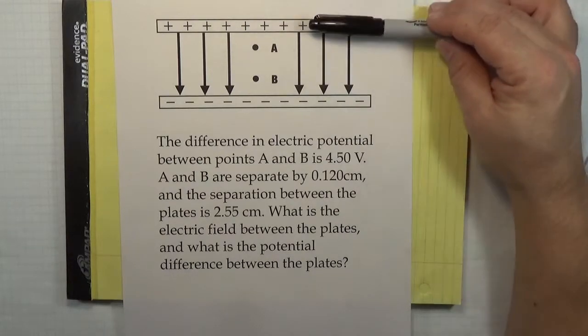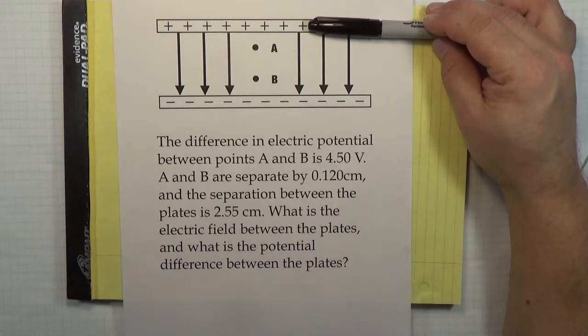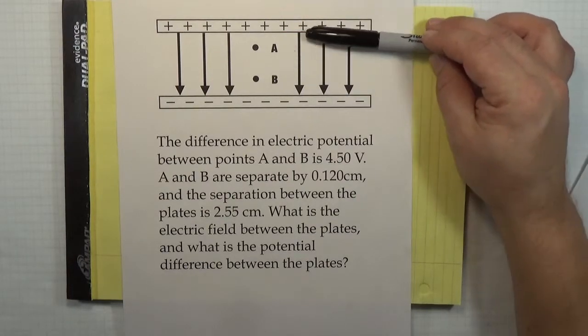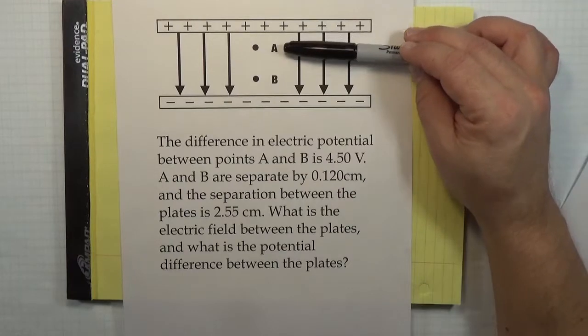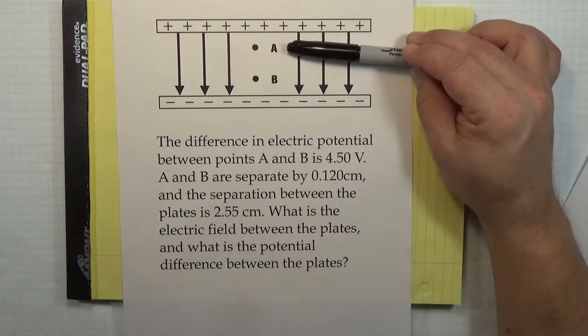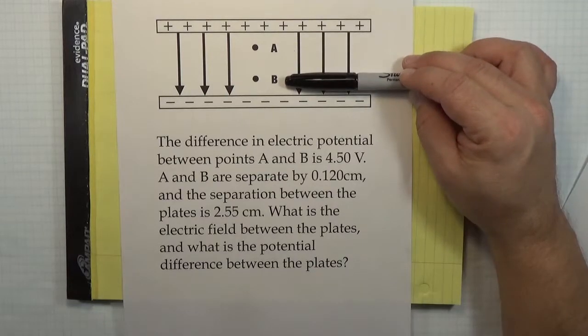And so I know that the potential is high on the positive side and low on the negative side. I know that the electric field points from high potential to low potential. And so what I know is that A is at higher potential than B.